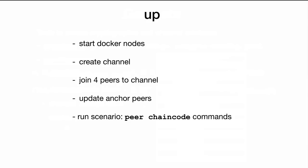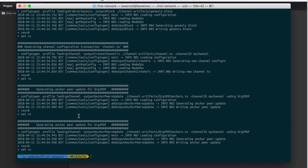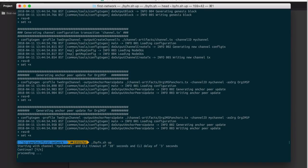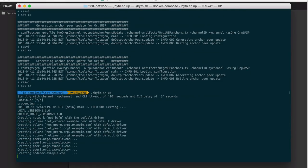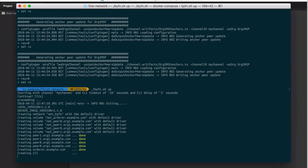The next command will be the main part of this tutorial. It will start the Docker nodes, actually create a channel — so far we have just defined it — join all four peers to the channel, update the anchor peers, and then run the actual scenario. This is going to take a little while, so I'm going to fast-forward the video so you don't have to wait so long.